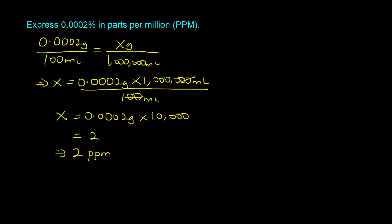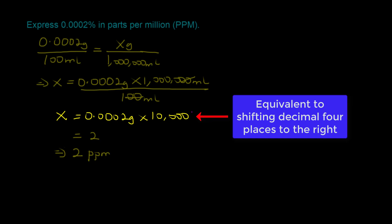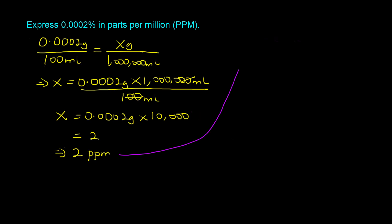If you take a closer look at what happened, you are actually multiplying 0.0002% by 10,000, which is equivalent to shifting the decimal place four places to the right. So the first nifty trick is simply to take the percentage strength — 0.0002% — and move the decimal four places to the right: 1, 2, 3, 4. We end up with 2 PPM.